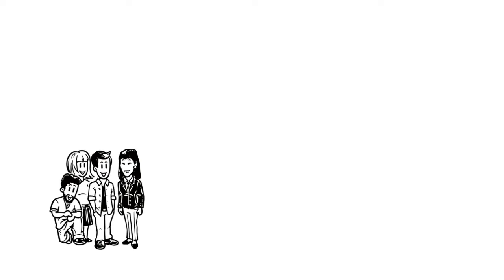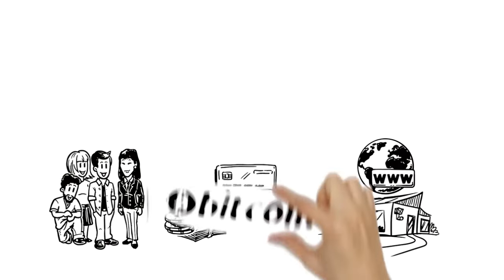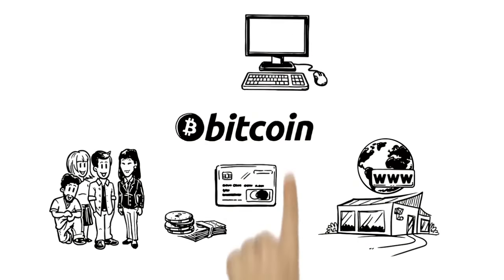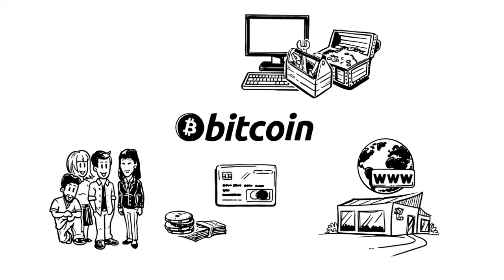Everyone knows about money. We use cash or cards to buy things, either in shops or online. Bitcoin works in a similar way, but is a completely digital currency. It is created and stored electronically.